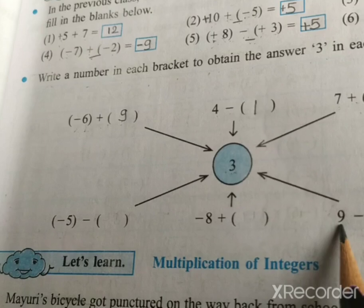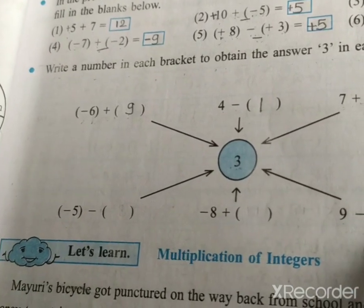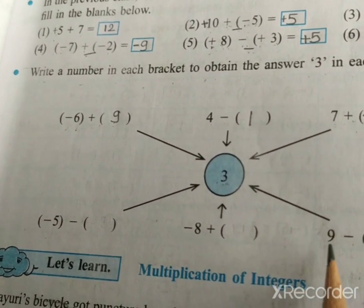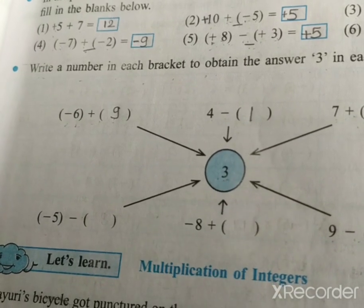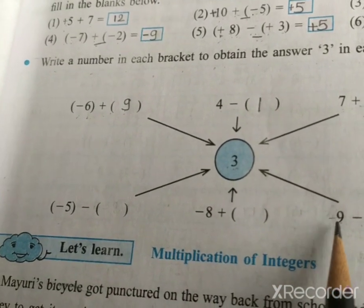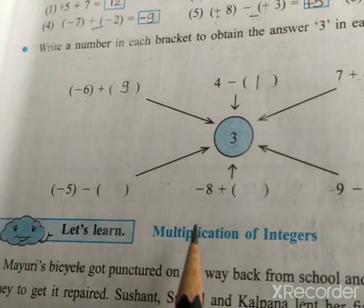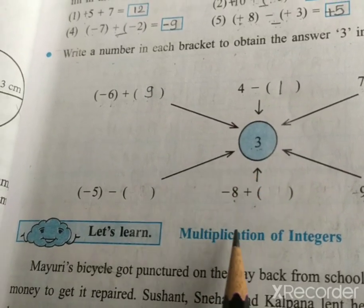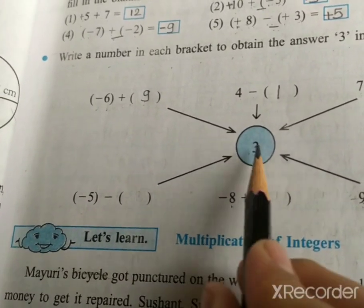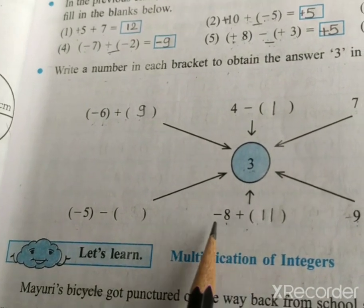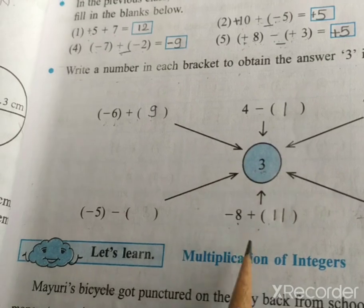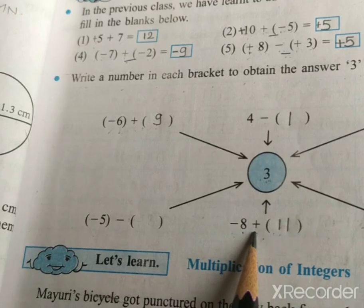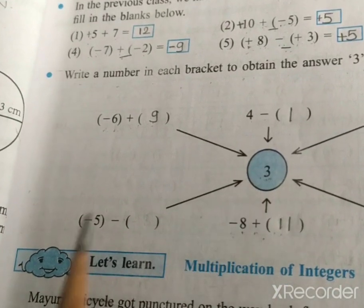Next question: 9 minus blank equals 3. Which number do we write? 9 minus 6: if we write 6, then 9 minus 6 gives positive 3, because the bigger number has a positive symbol. Next, the number 8: 8 is bigger than 3. If we take 8 plus 3 equals 11, then plus 11 minus 8 gives the answer 3. Plus and minus gives minus, and the bigger number is 11 with symbol plus. Therefore, our answer is plus 4.